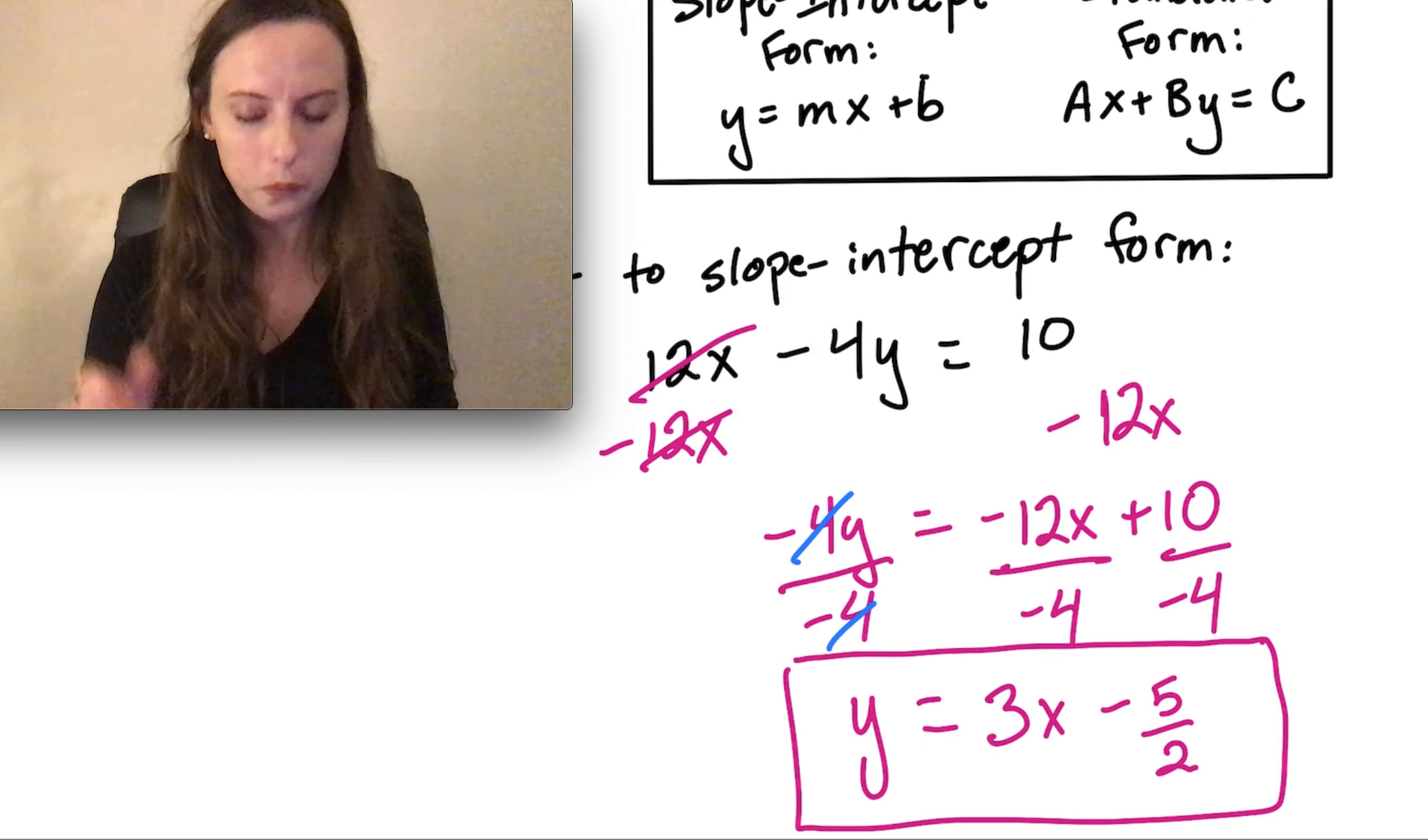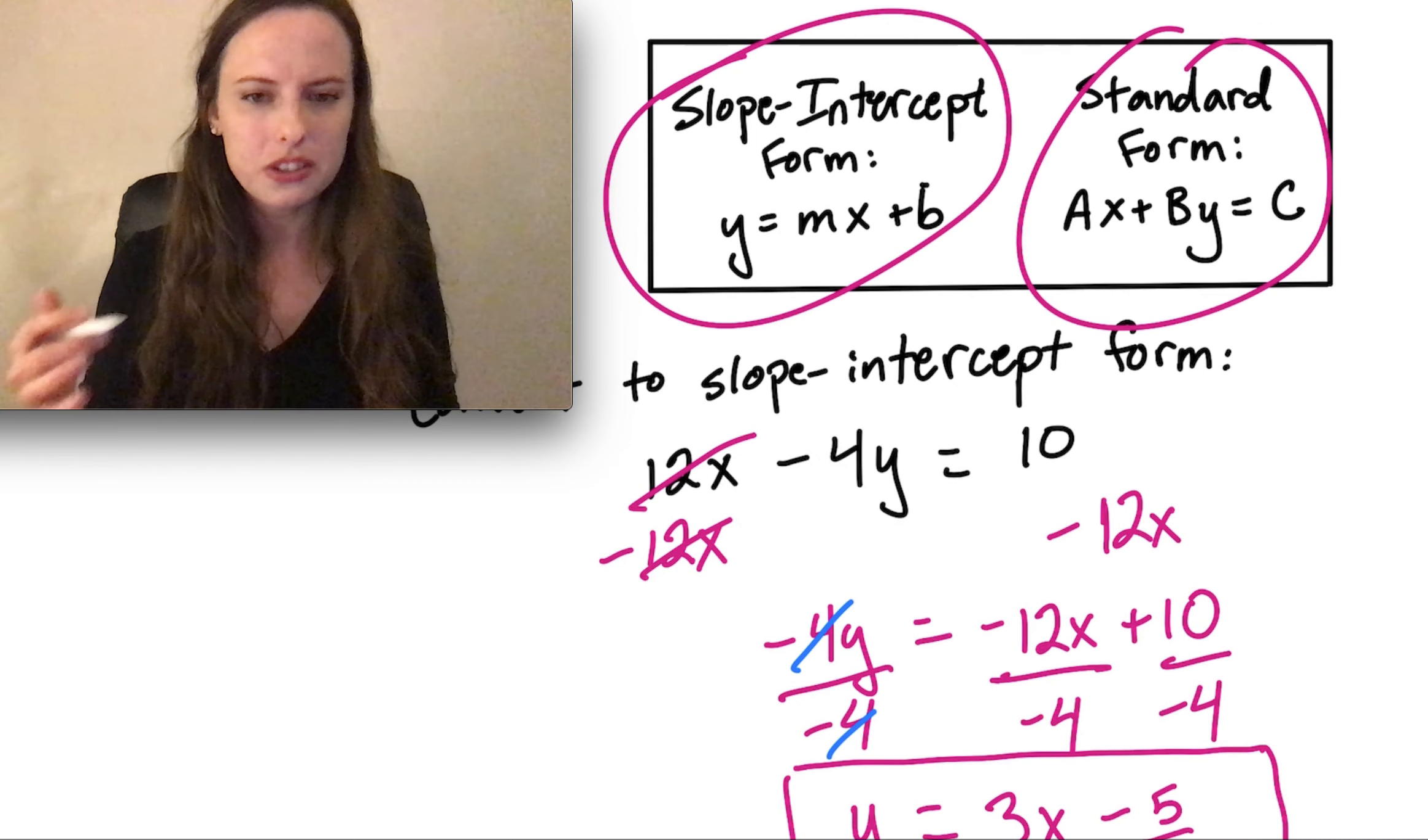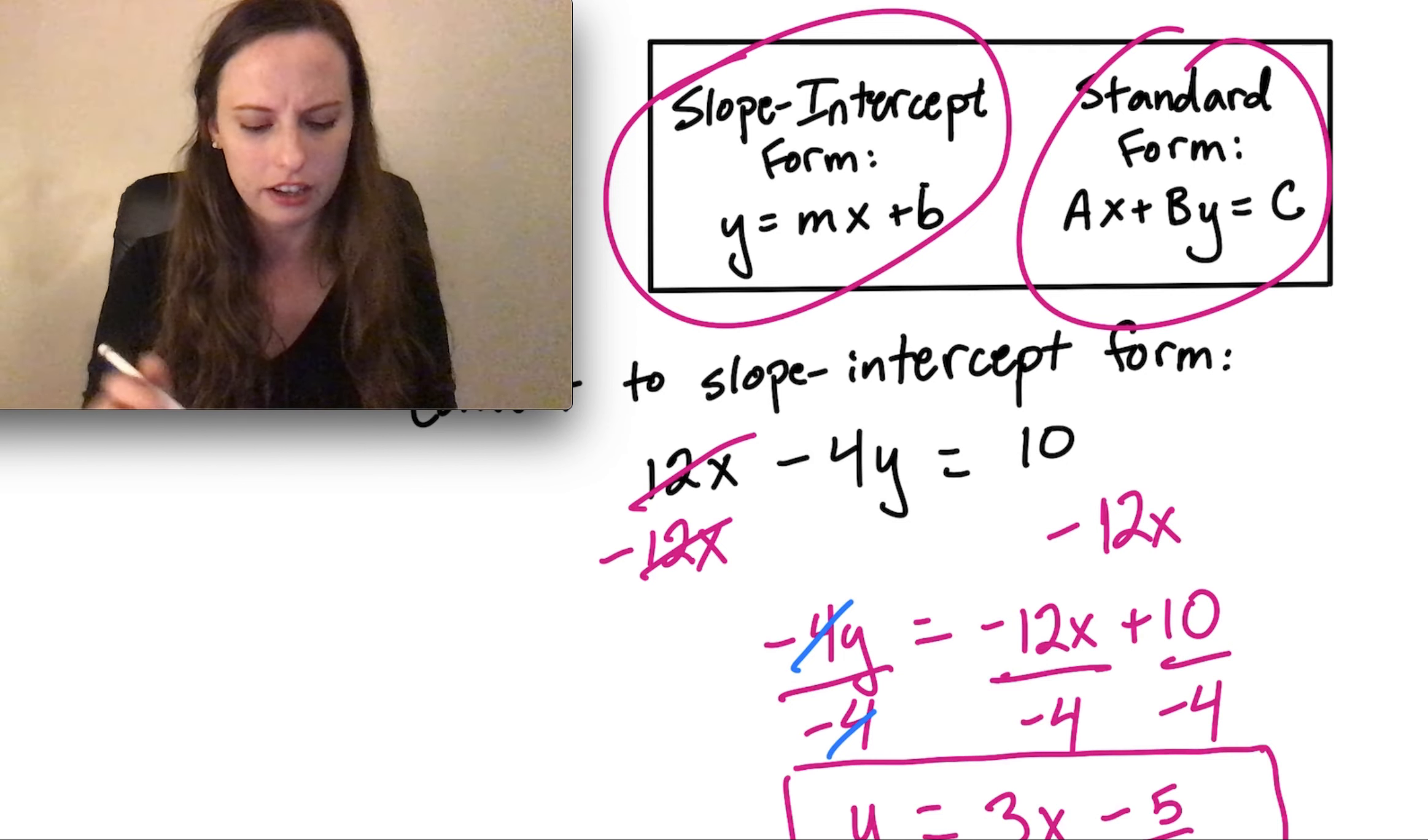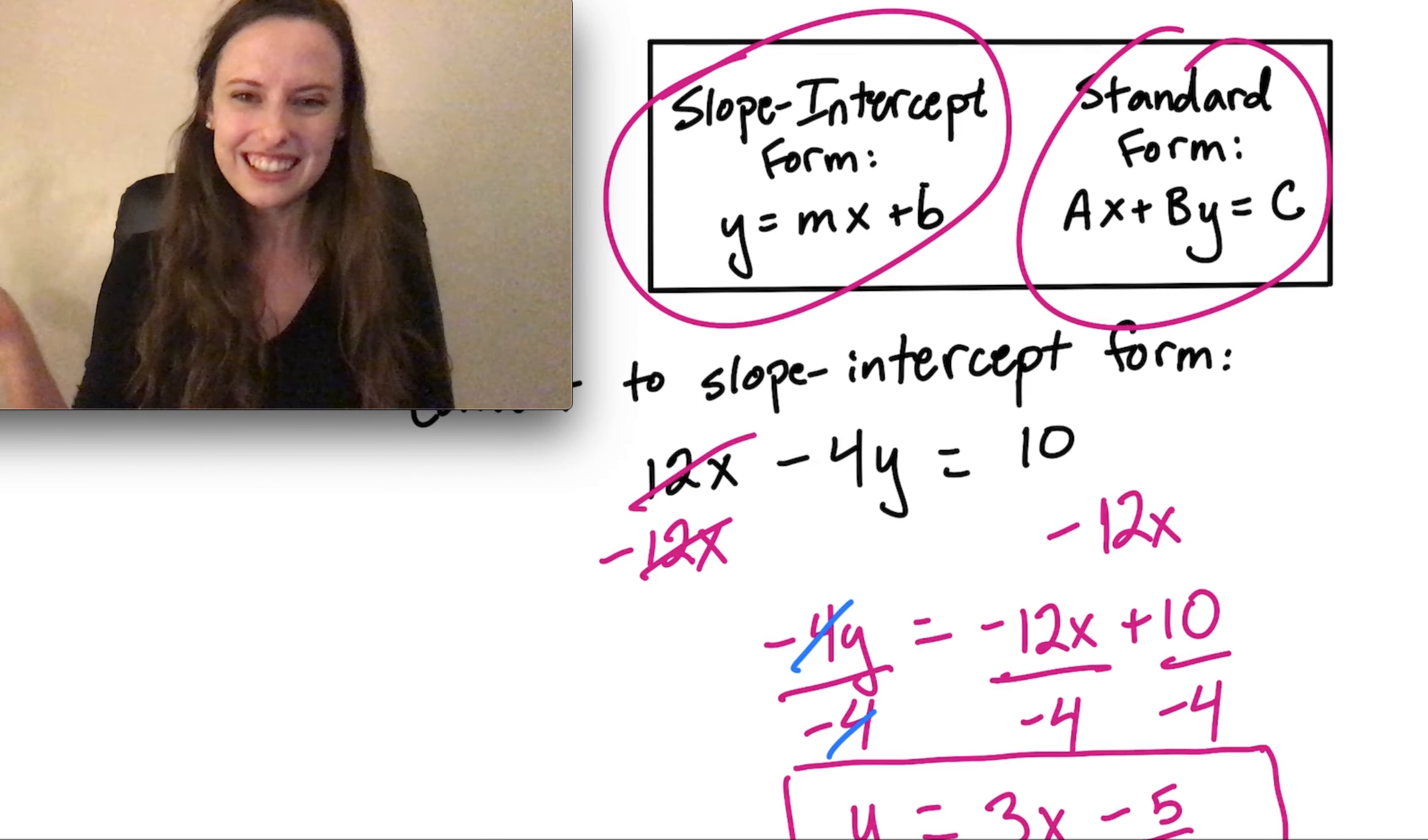So that's it. Whenever you're converting from standard form into slope-intercept form, you're just going to follow these algebra steps of getting y by itself. Move that x term over and then divide by the coefficient in front of y. And that's it.